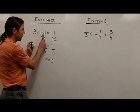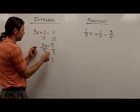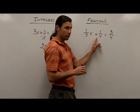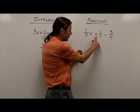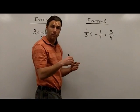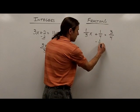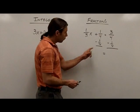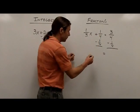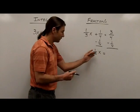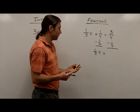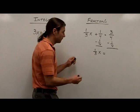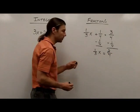With the integers, the first thing I did was undo the addition of 2. So over here in my fraction example, I'm going to do the same thing — I need to undo the addition of 1/4 by subtracting 1/4 from both sides. One fourth minus 1/4 is 0, leaving 1/3·x on the left side. On the right side, 3/4 minus 1/4 gives me 2/4.